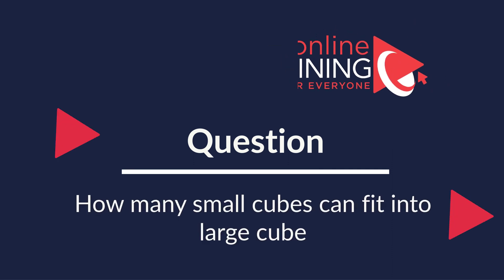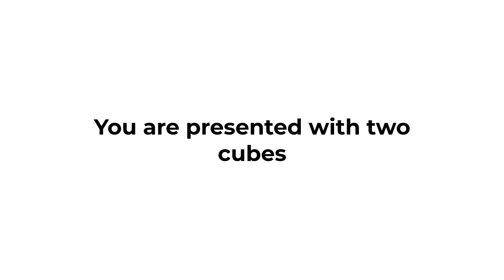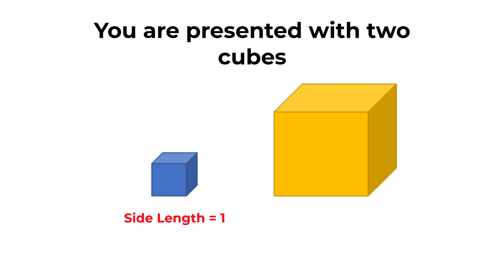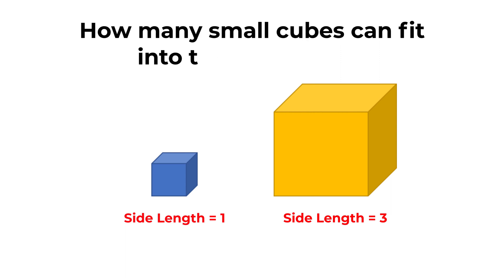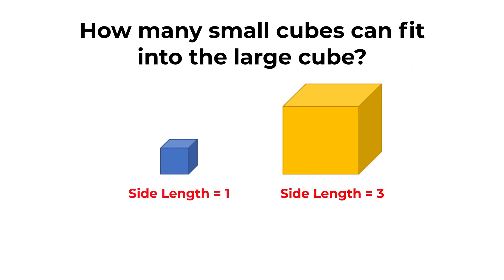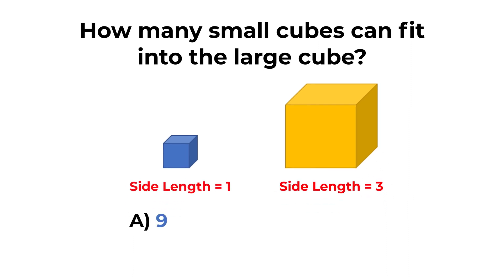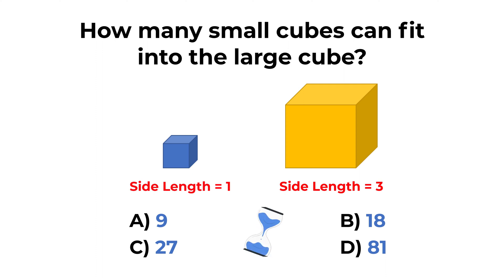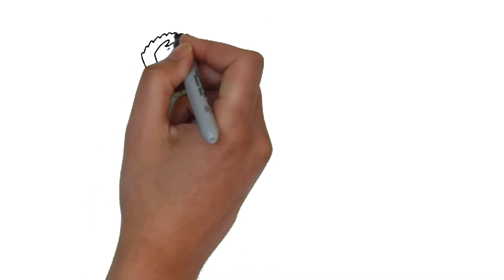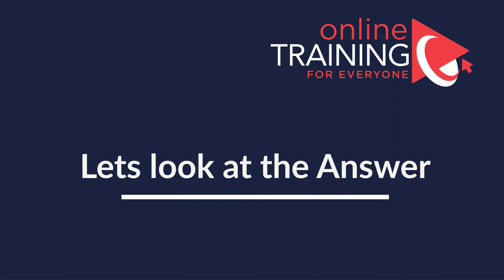Here's a cool question you frequently see on the test. You're presented with two cubes: one small cube with side length equal to one unit, and a larger cube with side length equal to three units. The question is: how many small cubes can fit into the large cube? The four choices are: A) 9, B) 18, C) 27, and D) 81. Give yourself 20 to 30 seconds.